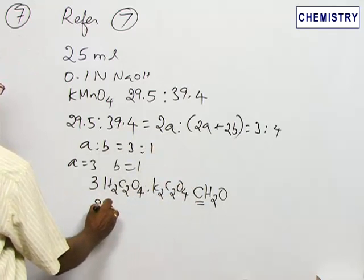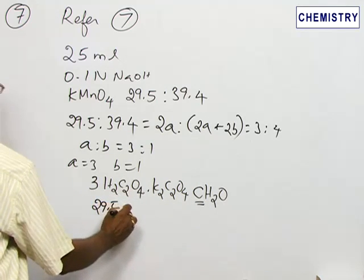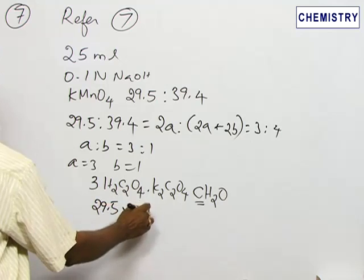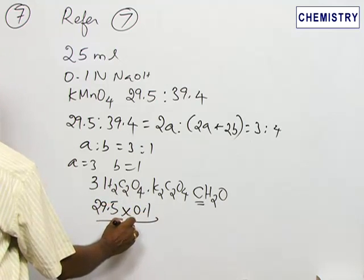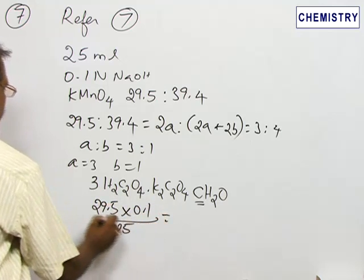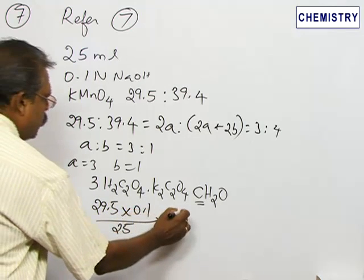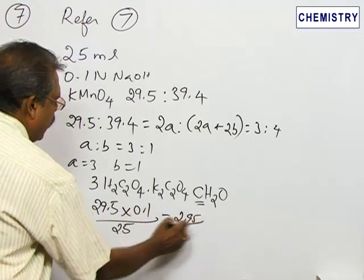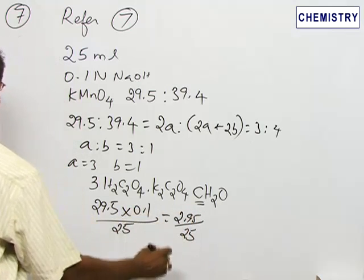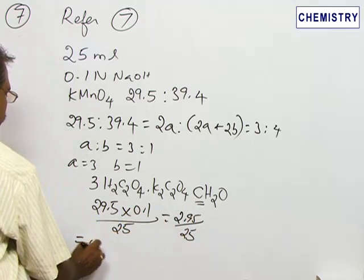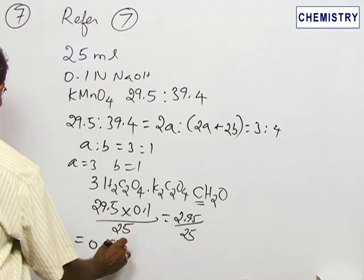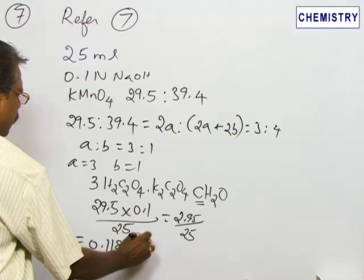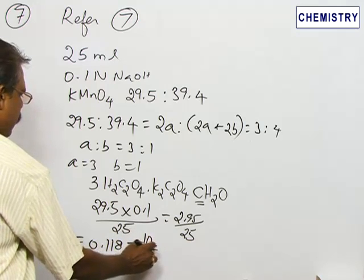29.5 into 0.1, 0.1 is the normality, divided by 25. This will give 29.5 into 0.1, 2.95 divided by 25, which is equal to 0.118.